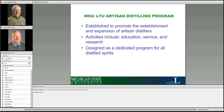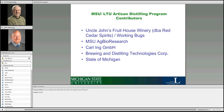You cannot self-train yourself unless you have a license. We have several contributors to our activities at Michigan State. Uncle John's Fruit House Winery does business under the title of Red Cedar Spirits — they have a complete distilled spirits plant license and a lease with MSU, where MSU's equipment is actually used to operate that commercial facility. A cohabitant of our facility is another company called Working Bugs, who primarily focuses on industrial alcohol production. Both companies have full distilled spirit plant licenses.